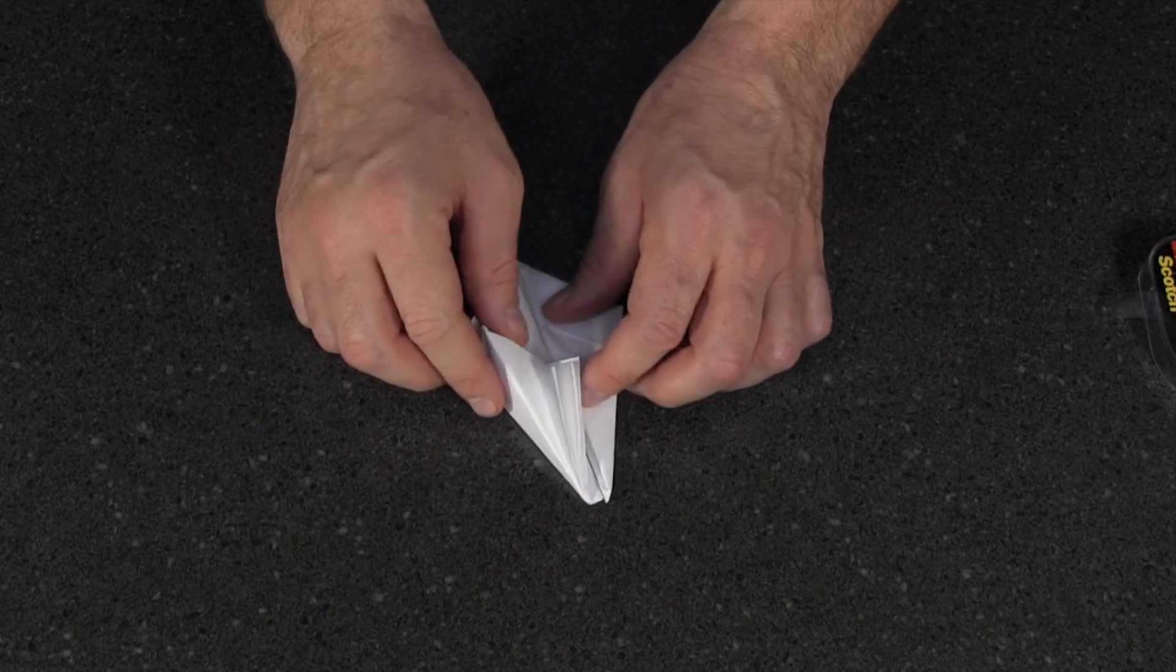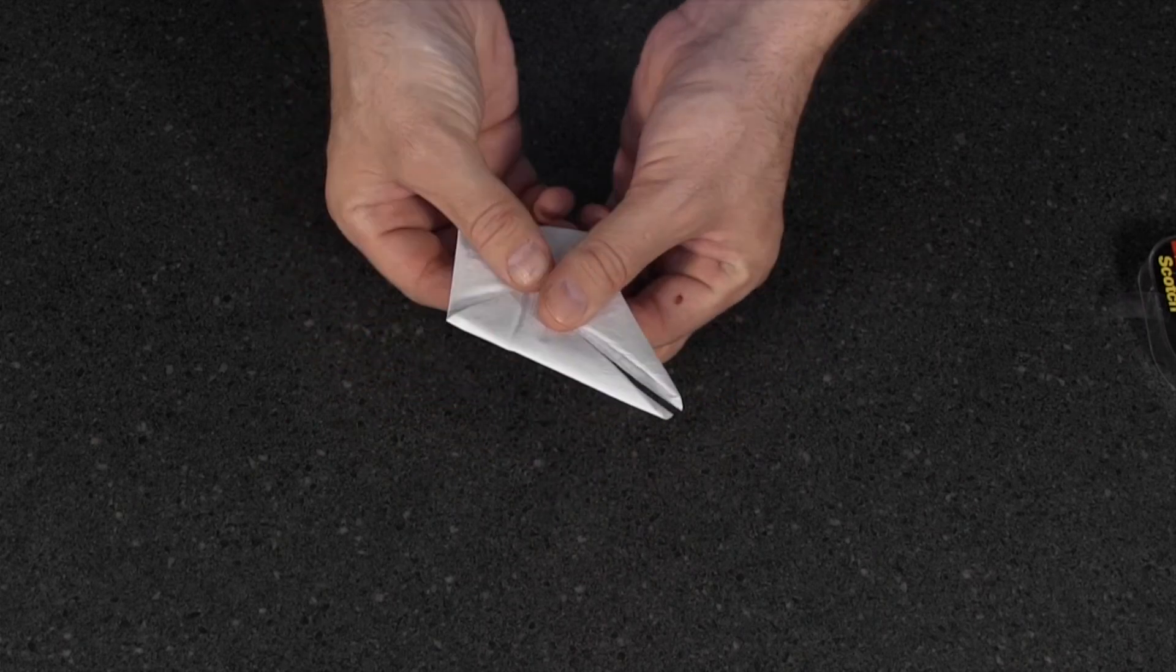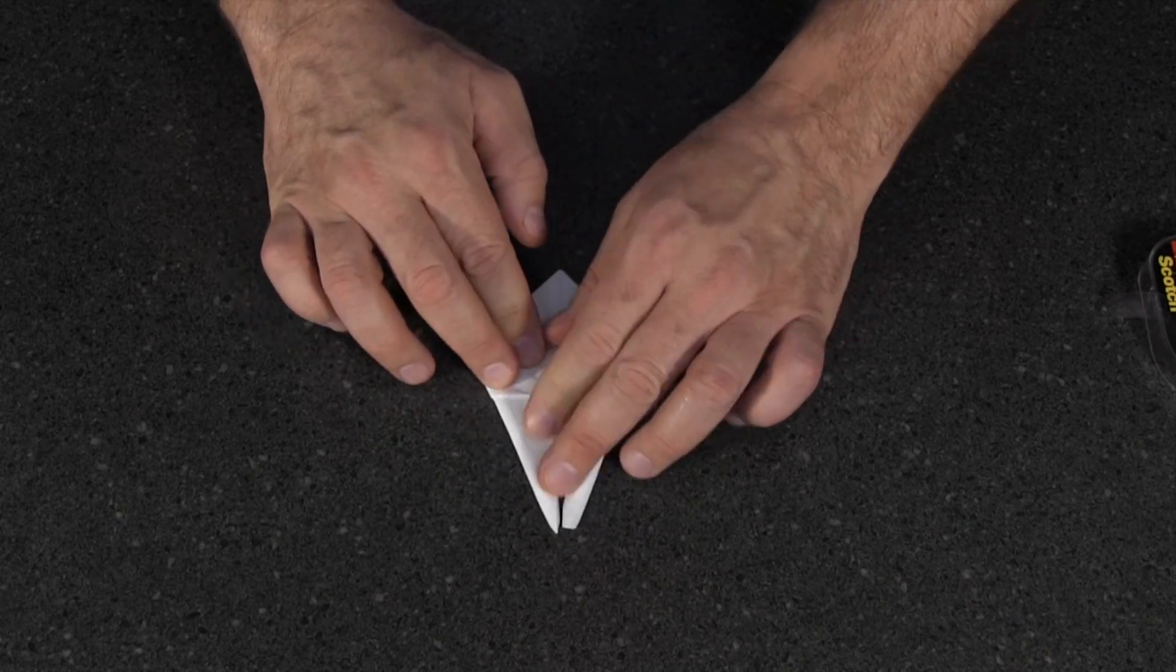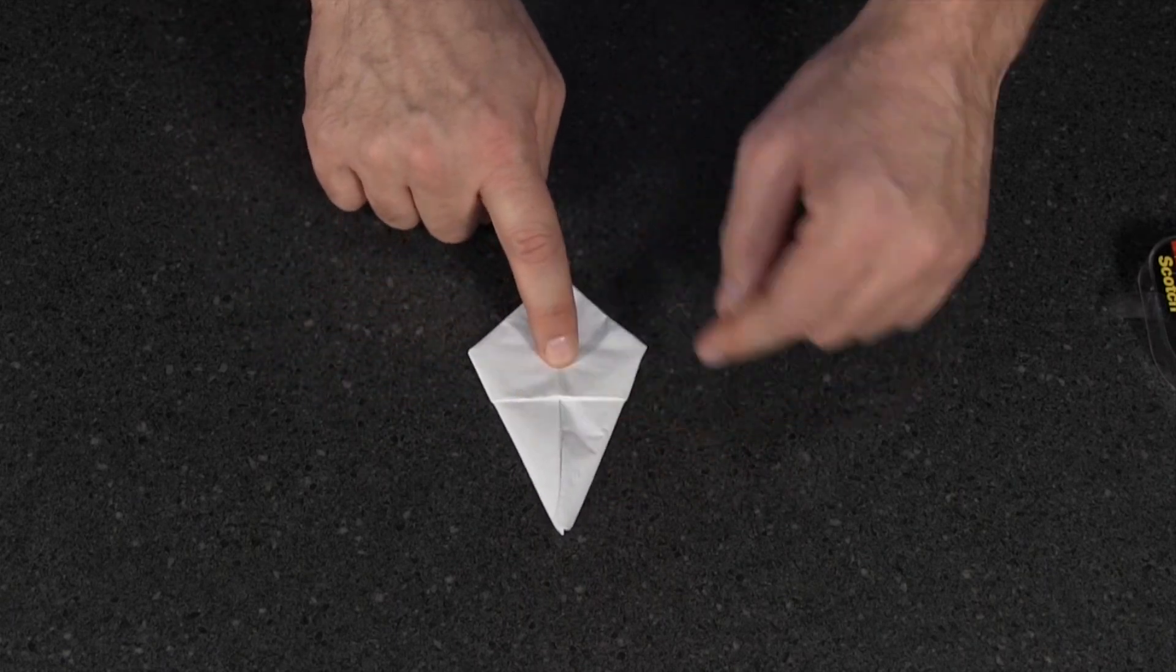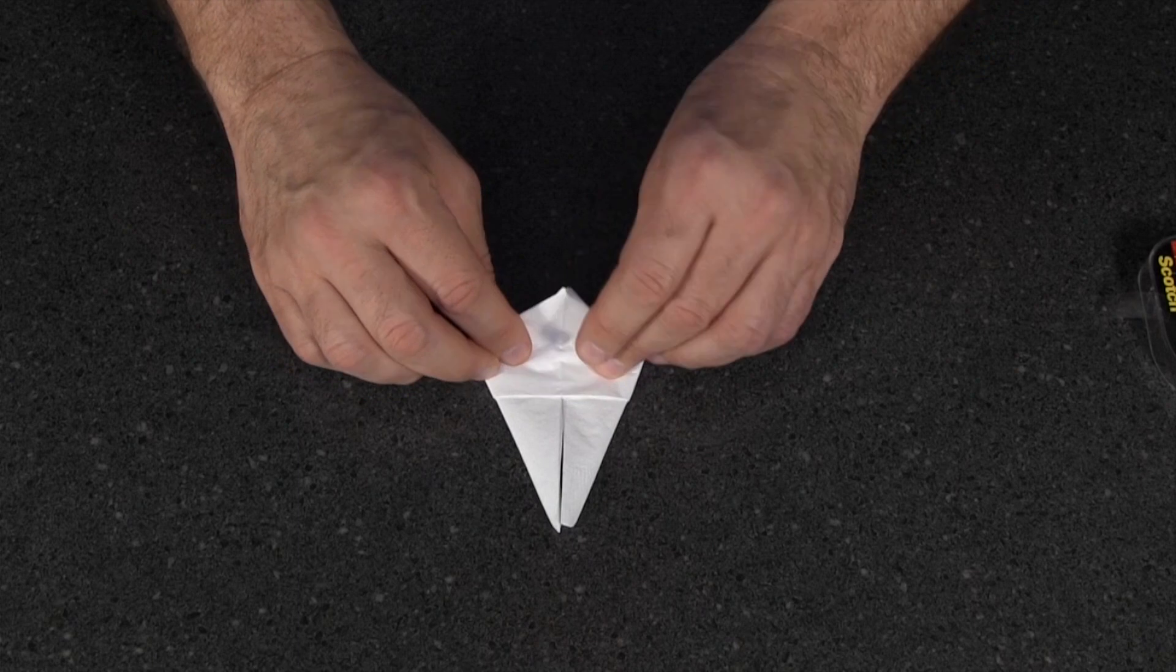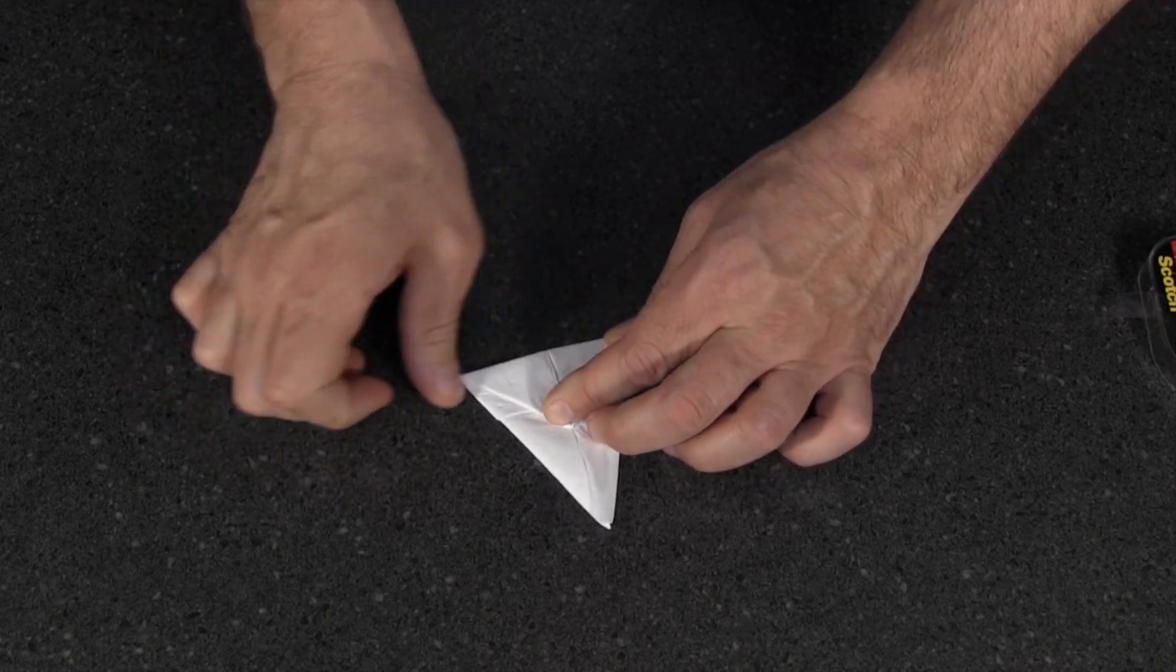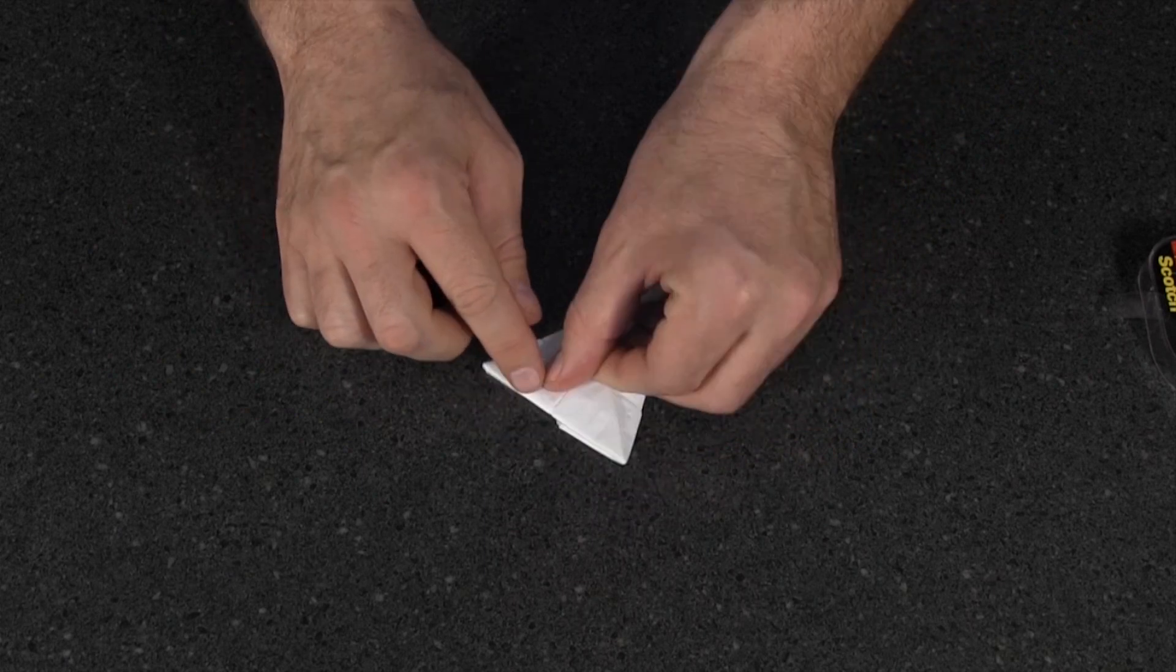And you're going to flip over the whole thing, just hold that together. Flip the whole thing over, and you should have a nice sort of kite shape here. Then you're going to bring this bottom piece up like this and give that a nice crease too.